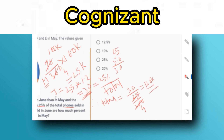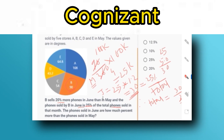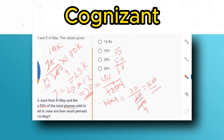Total phones sold in June = 120k, and total phones sold in May = 100k. So the percentage by which June sales exceed May sales is (120k − 100k) / 100k × 100 = 20%. The phones sold in June are 20% more than phones sold in May.